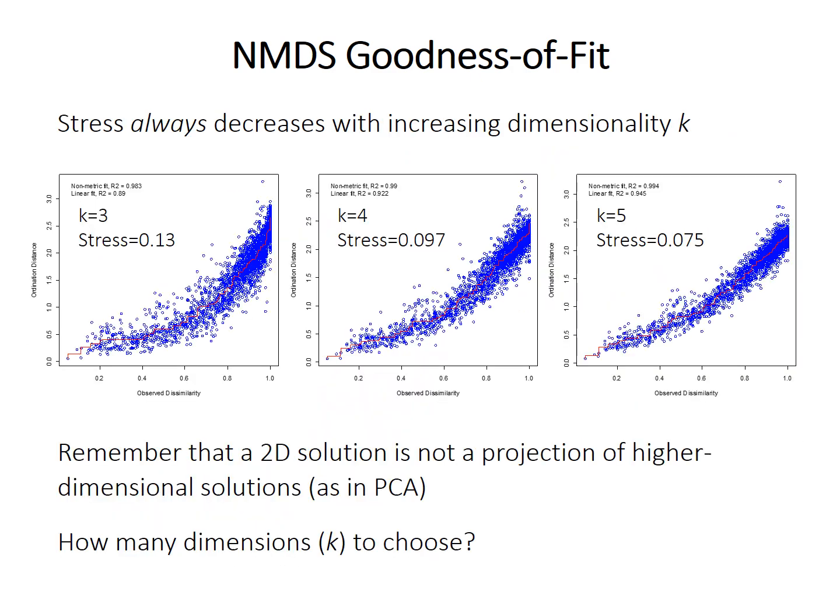By definition, stress — the mismatch between the ordination fit and the real data — must always decrease as you consider more dimensions, often denoted K. This intuitively makes sense: if your original data has five dimensions and you do ordination in five dimensions, you can fit it perfectly. It gets progressively harder in four, three, and two dimensions, and very hard in one dimension. You're losing progressively more information, so it becomes harder to capture the true relationships.